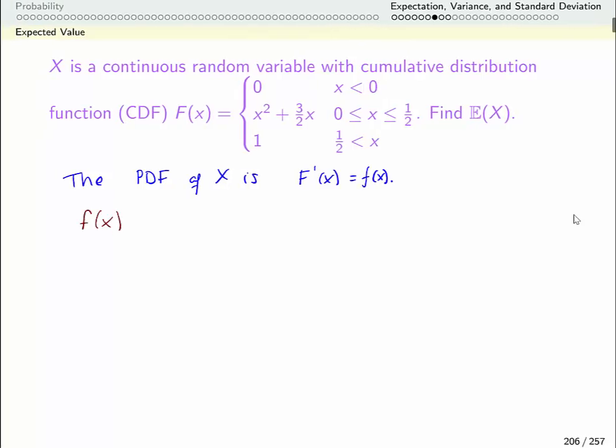The probability density function is also going to be piecewise. When x is less than 0, my cumulative distribution function is constant. The derivative of a constant is 0. And similarly, when x is bigger than 1 half, my cumulative distribution function is constant. The derivative of a constant is 0. So my probability density function is also 0 if x is greater than 1 half.